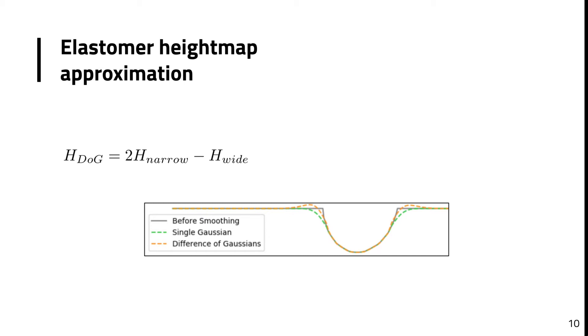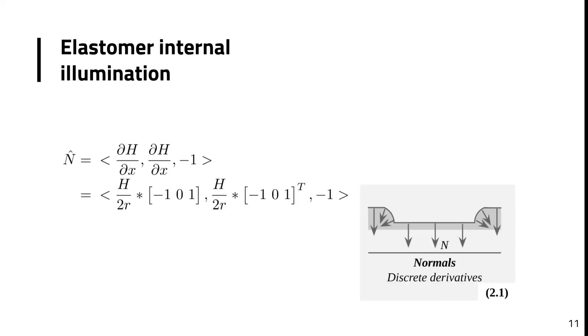For the second step, i.e. for generating the RGB tactile image, the Fong illumination model is used. To that extent, the height map normals n are computed using the discrete partial derivatives of the height map, where r is a pixel-to-meter ratio obtained through a basic calibration process. Please see the section 5D of the paper for more details about this calibration process.